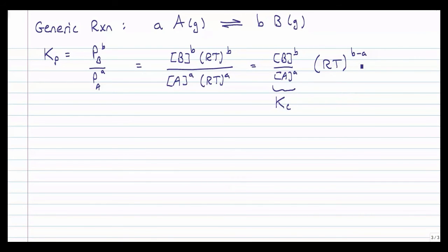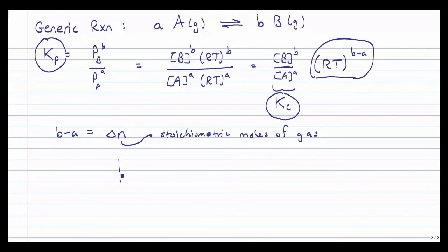And if we look carefully, b minus a is equal to what we can call delta n, where n is the stoichiometric moles of gas. So what we find is K sub P is equal to K sub C times RT to the delta n.